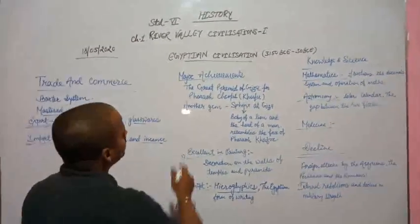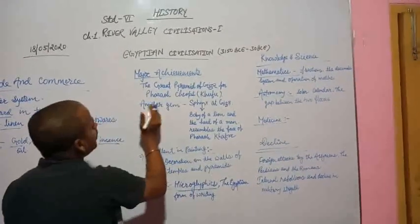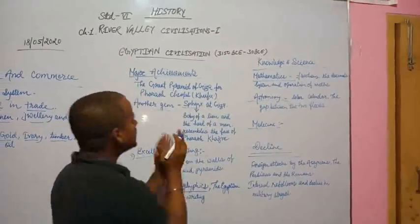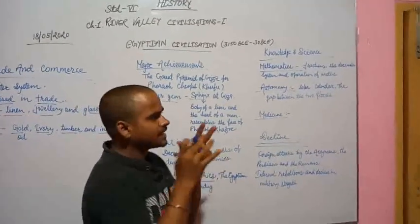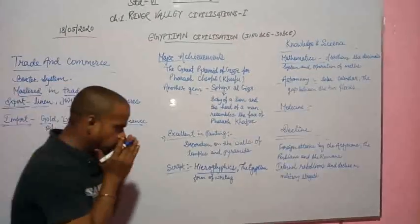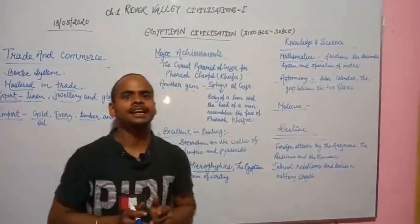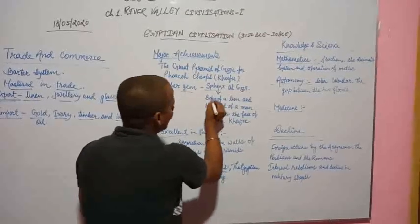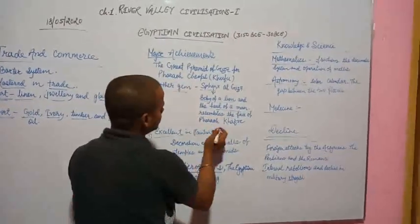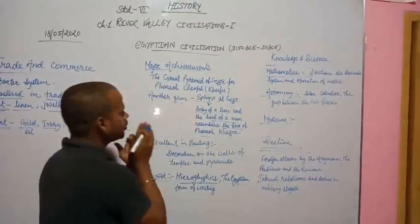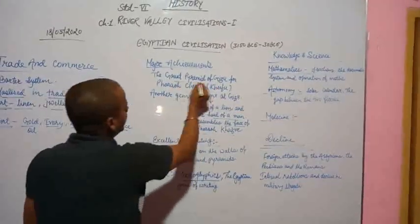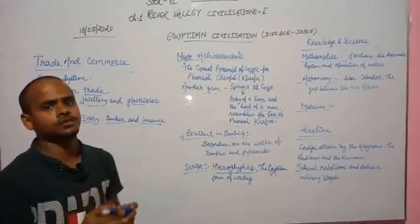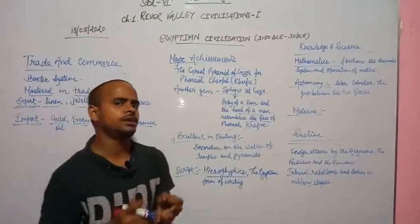Major achievements. The great pyramid of Giza for pharaoh Khufu, and the Sphinx. Sphinx was engraved on one stone with body structure of a lion and the head of a man, resembling the face of pharaoh Khafre. The great pyramid of Giza is also one of the seven wonders of the world.